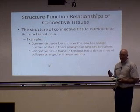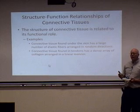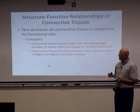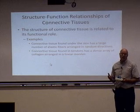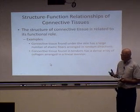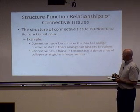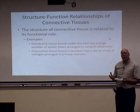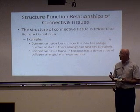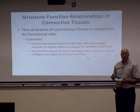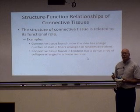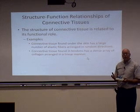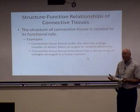Just like epithelial tissue, connective tissue's structure is related to its function. For example, the connective tissue under the skin has a large number of elastic fibers arranged in random directions, allowing the skin to be very stretchy. Whereas the connective tissue in tendons is composed of densely packed collagen fibers all arranged in a linear order, giving the tendon a lot of strength in the direction the joint is moving.